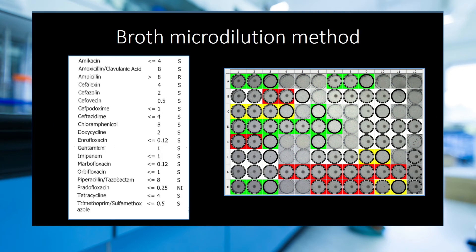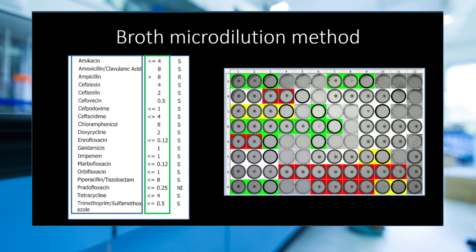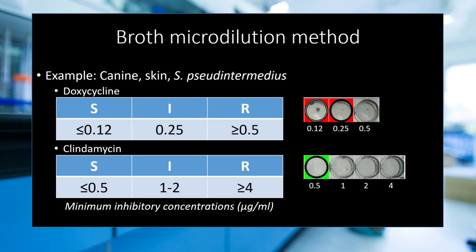As I mentioned in AST Part 1, my lab uses the broth microdilution method. This is an example of one of our reports. It includes the drug name, the MIC value, and the interpretation: S for susceptible, I for intermediate, or R for resistant. The tables shown here contain the standard interpretation criteria for the broth microdilution method specific to our example case, which I like to think of as the expected serum concentrations. In our 96-well plate, doxycycline is contained in 3 wells and clindamycin is contained in 4.